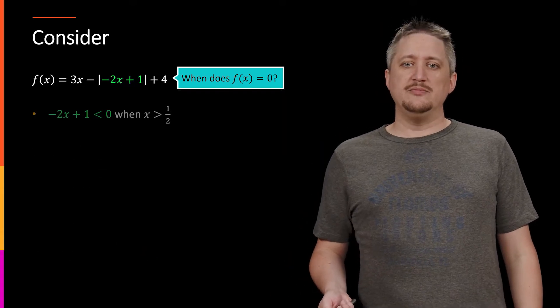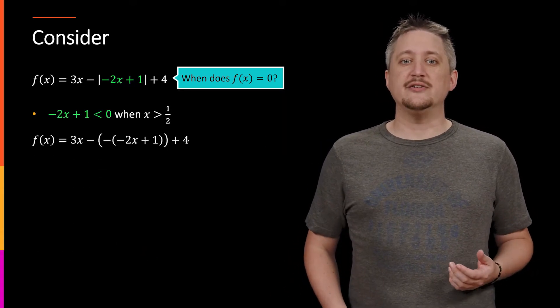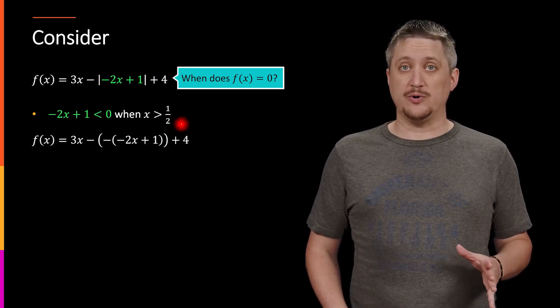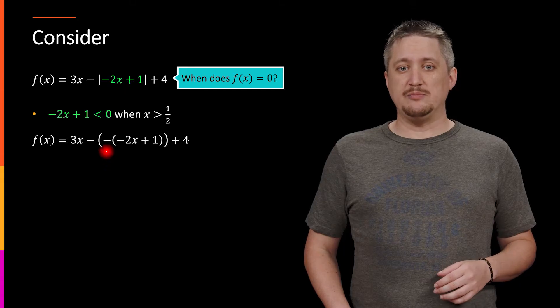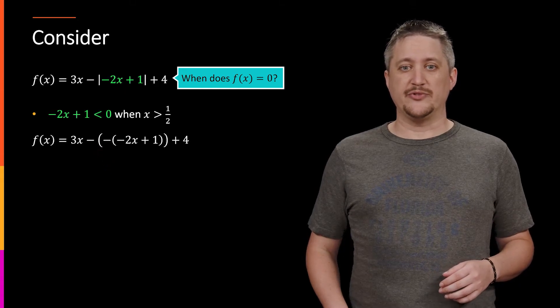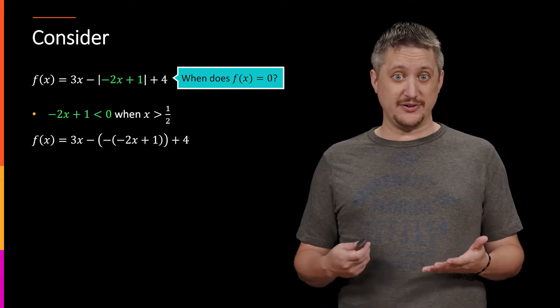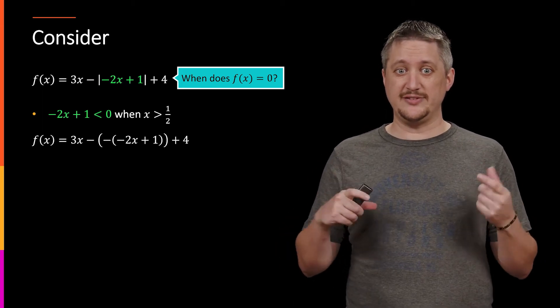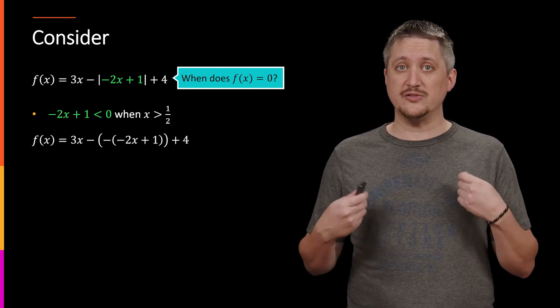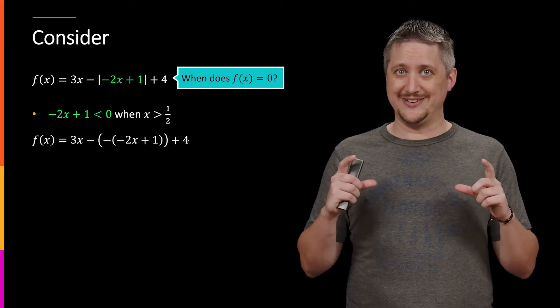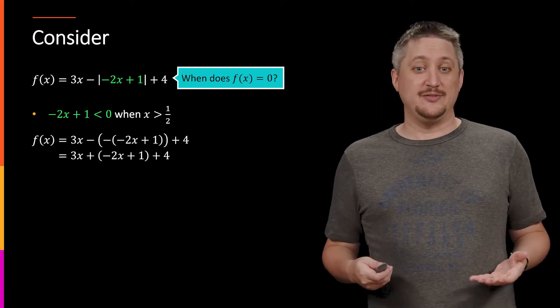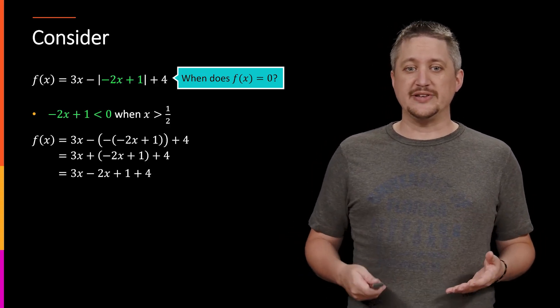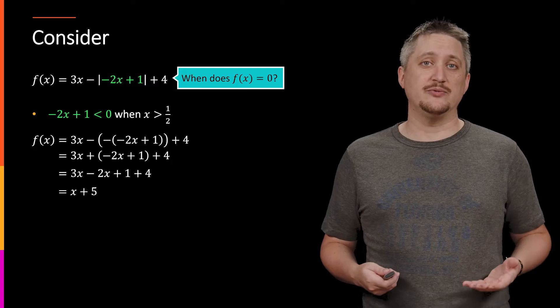But what about the other situation? We have that the inside of the absolute value is negative when x is greater than 1/2. And when it's negative, we multiply by that negative 1 out front. So again, now that we know what the interior is, we can replace it, the absolute value with parentheses, in this case, multiplying by -1 so that we actually have that making things positive and simplify. So moving through, we distribute the -1, we put our terms together, we get x + 5 as our end result.